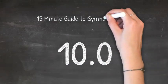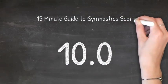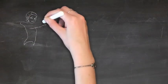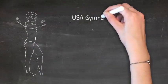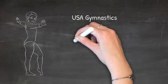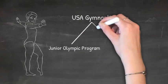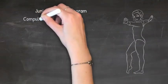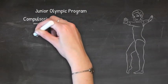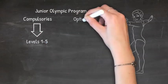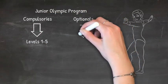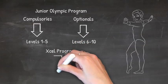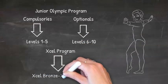This is a 15-minute guide to gymnastics scoring by Gymnastics HQ. In this video we are specifically talking about scoring for the USA Gymnastics Junior Olympic program and Excel program. The Junior Olympic program consists of compulsories from levels 1 through 5 and optionals from level 6 through 10, and then the Excel program runs from Excel Bronze through Excel Diamond.